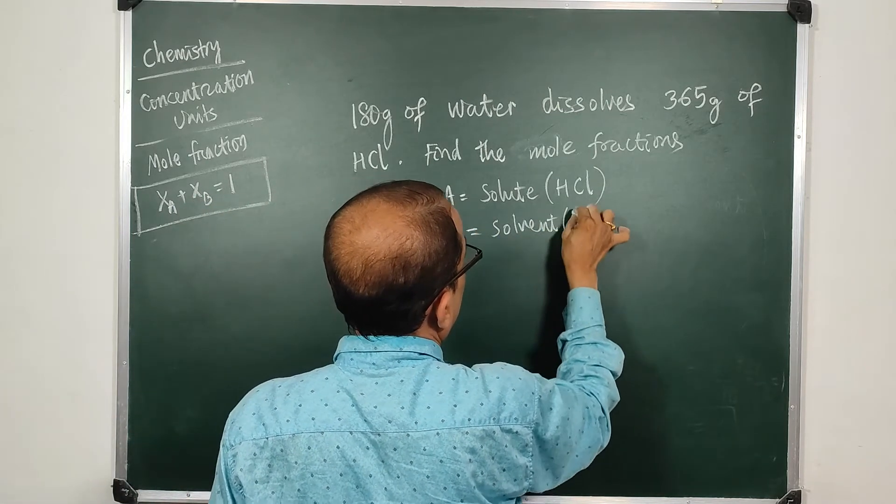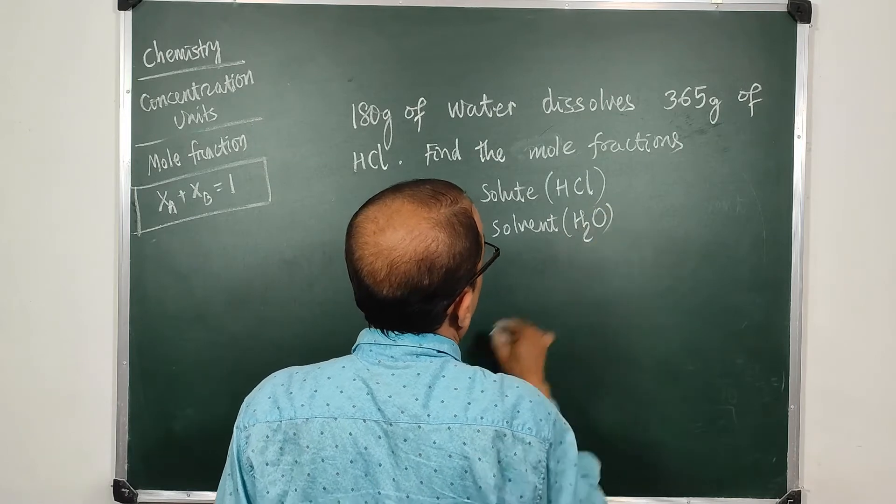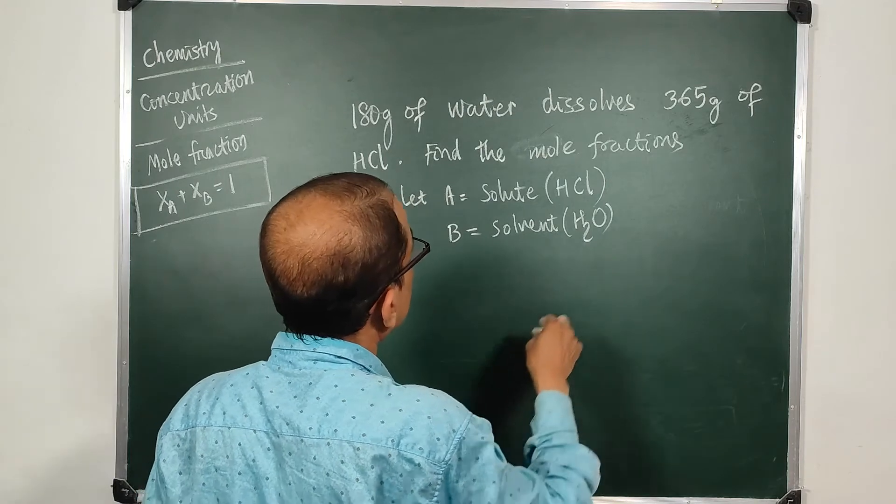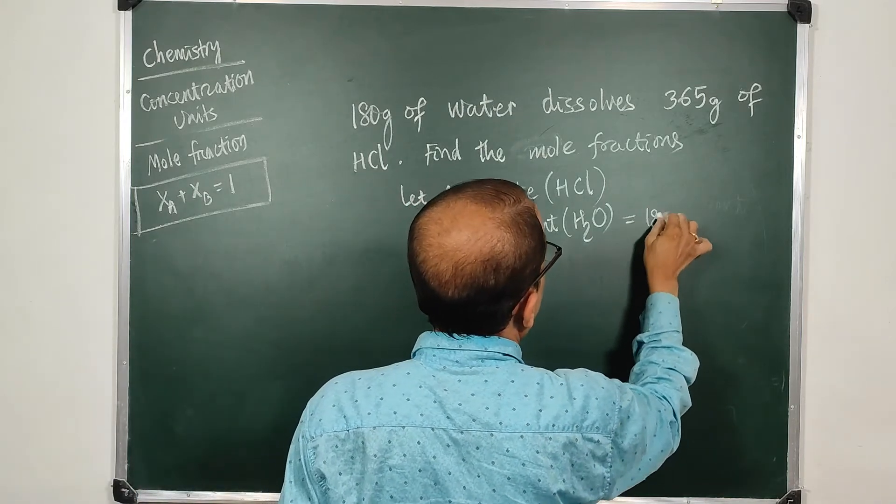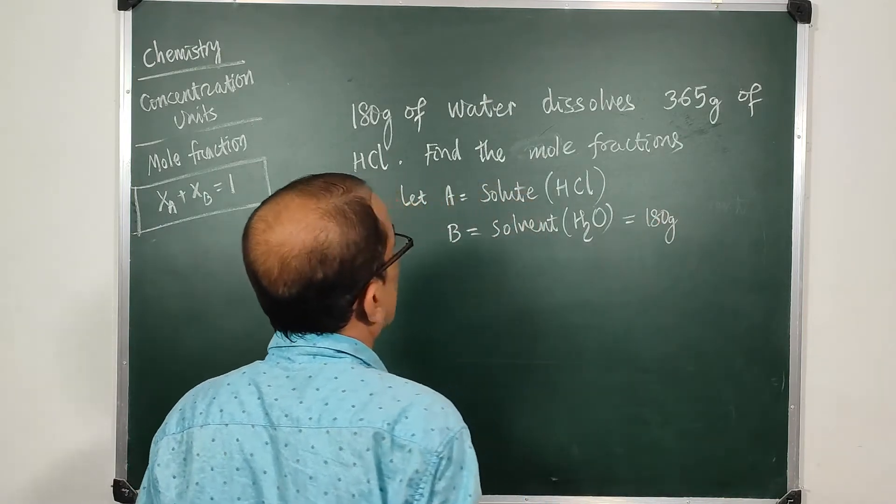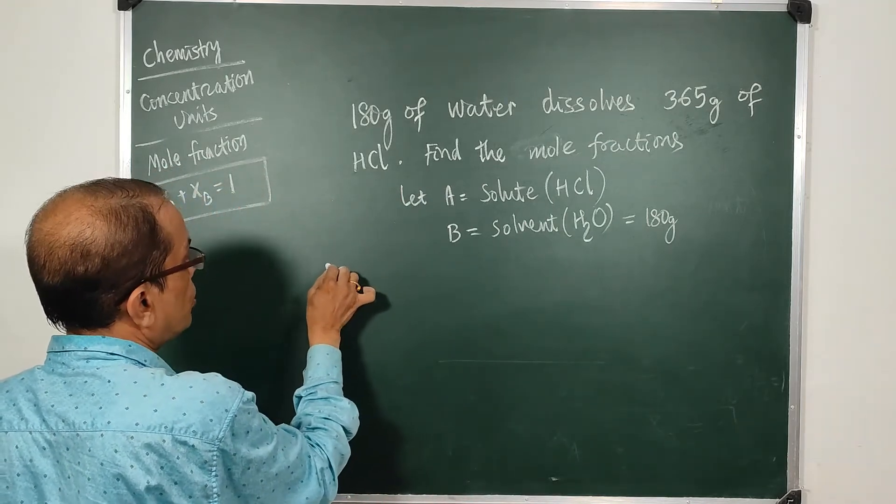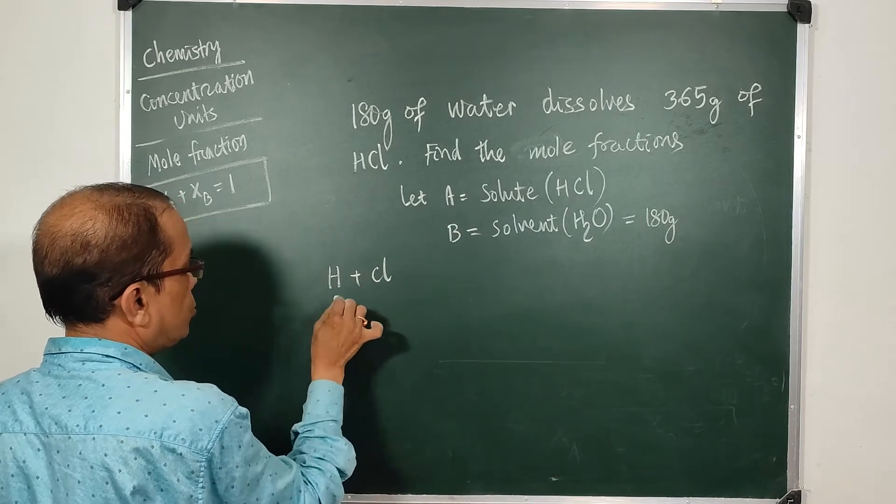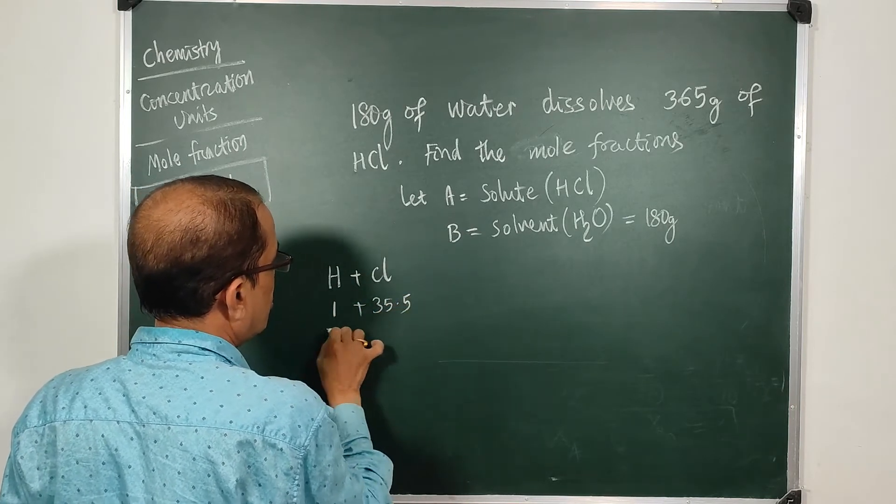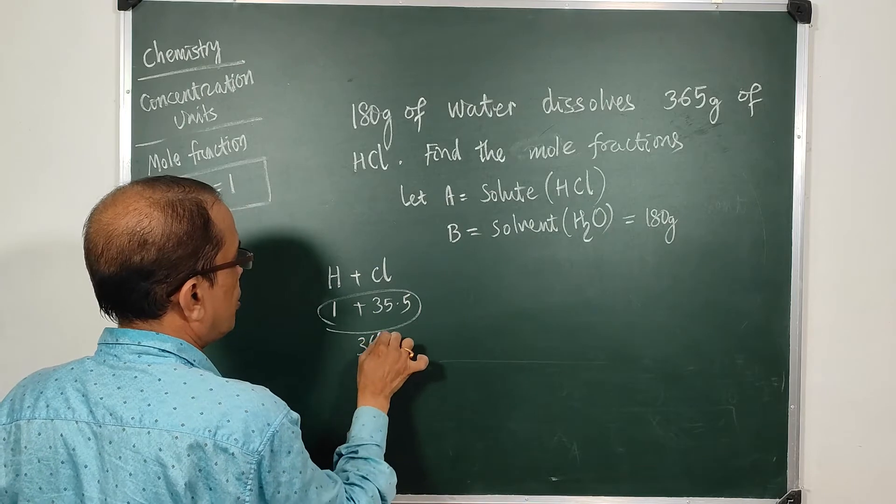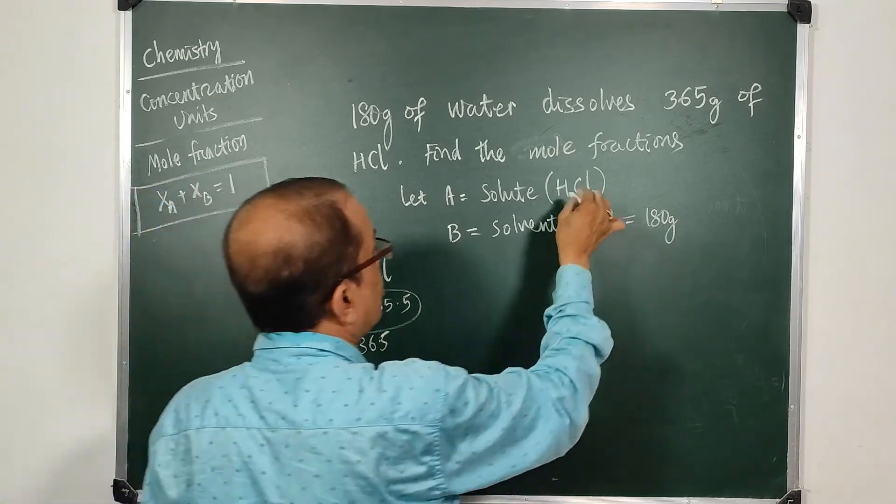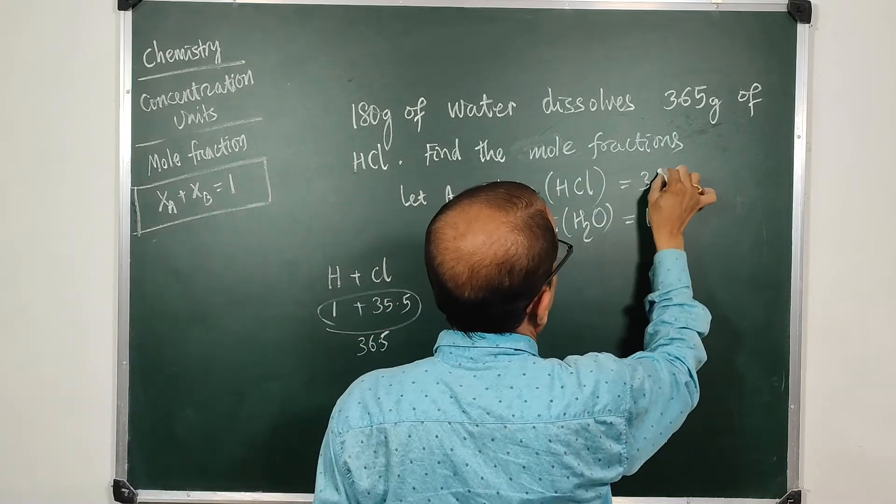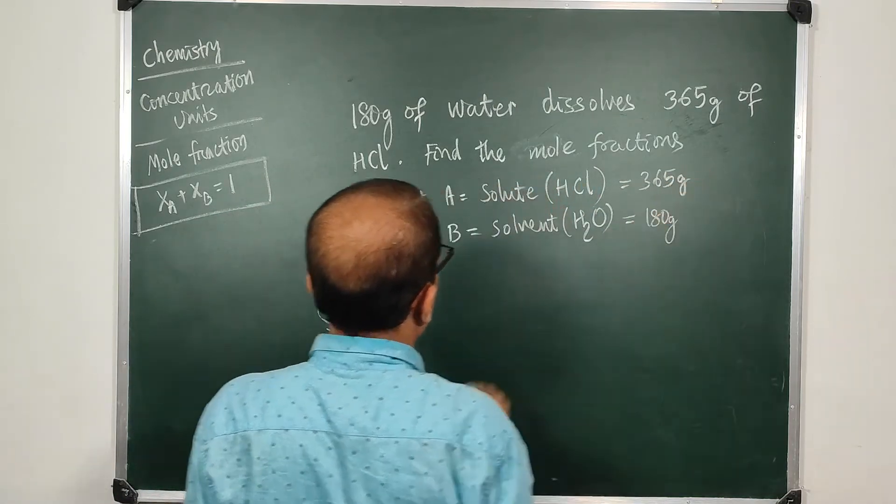And as you know the mass of water here is 180 grams. And hydrochloric acid, in the previous discussions we had studied the hydrogen and chlorine: this is 1, this is 35.5, so in all this is 36.5. So molecular mass of solute is 36.5, and here we have 365 grams. So let us find both the number of moles.